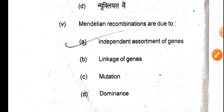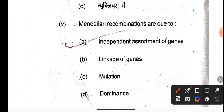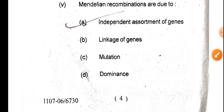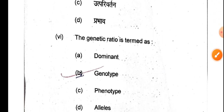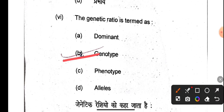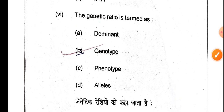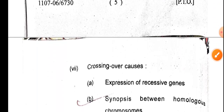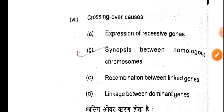Next: Mendelian recombination is due to the independent assortment of genes. And the genetic ratio — the genotype ratio versus the phenotype — that is referred to as the genotype ratio.